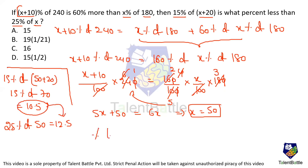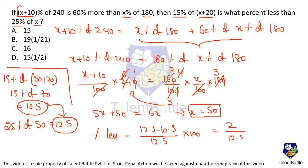Percentage less equals the difference divided by the base we're comparing to, into 100. So (12.5 minus 10.5) divided by 12.5 into 100, which is 2 divided by 12.5 into 100. After cancellation this gives 16%. So 15% of X plus 20 is 16% less than 25% of X. The answer is Option C.